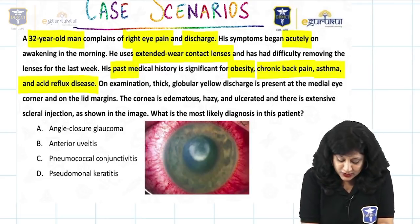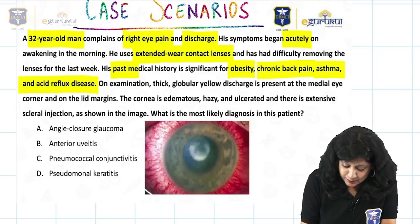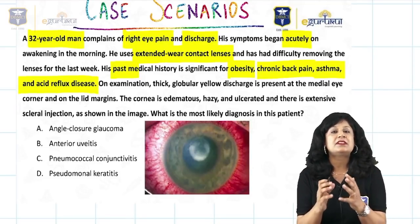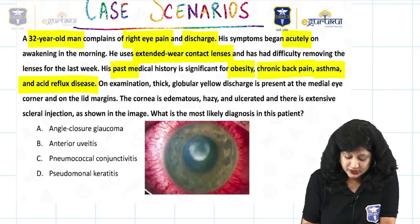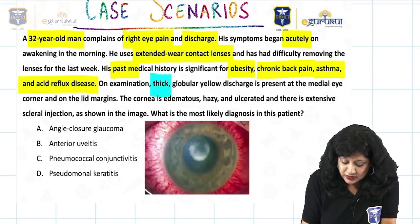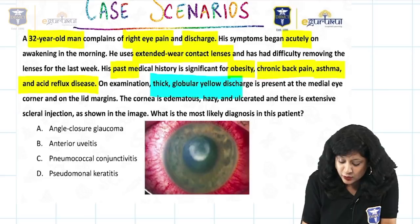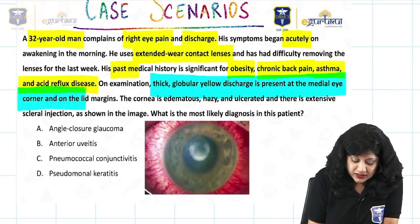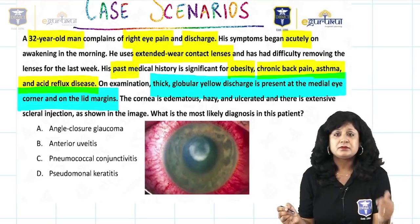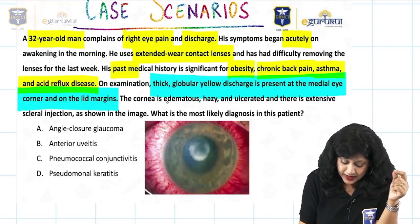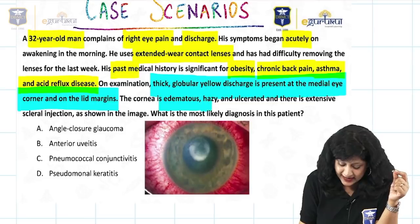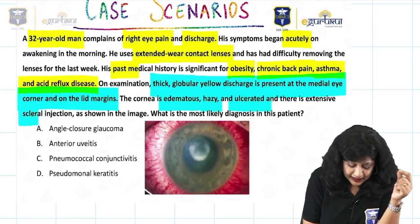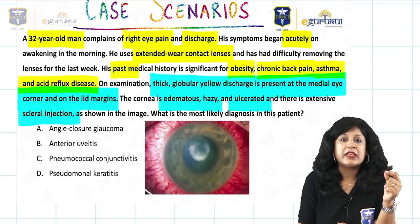On examination, we have a very important finding — this will help us reach a concrete diagnosis. We have a thick globular yellow discharge at the medial corner and the lid margins. The cornea is edematous, hazy, and ulcerated with scleral injection shown in the image.